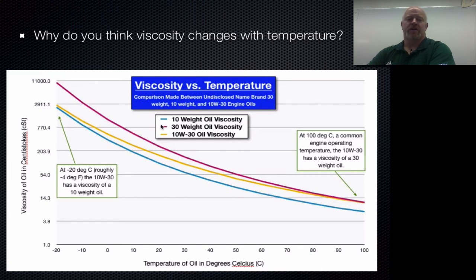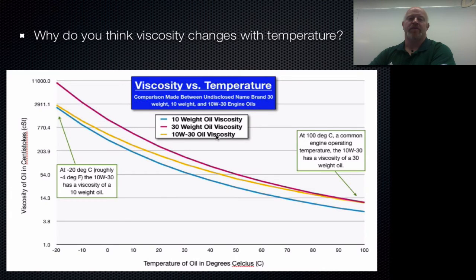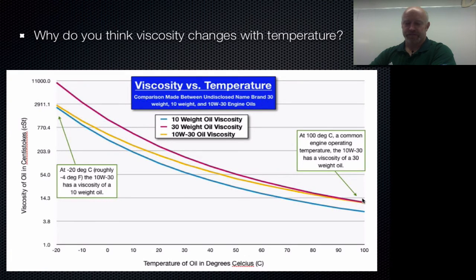If you take a look, your 10-weight oil in the blue line has a viscosity that is lower than 30. The 30-weight flows less and the 10 flows more, meaning the 30-weight is more viscous than the 10. With 10W-30, the reason we have these double-numbered oils is because you want the best of both worlds — you want it to flow better when it's really cold, but when it gets up to operating temperature, not be too thin. You want it to work well when your engine is cold and starting, but also not thin out too much when running at high temperatures.